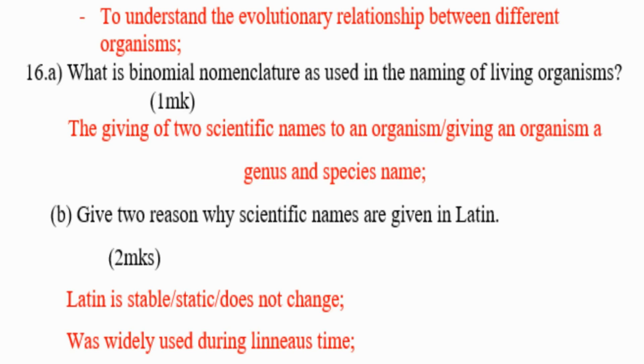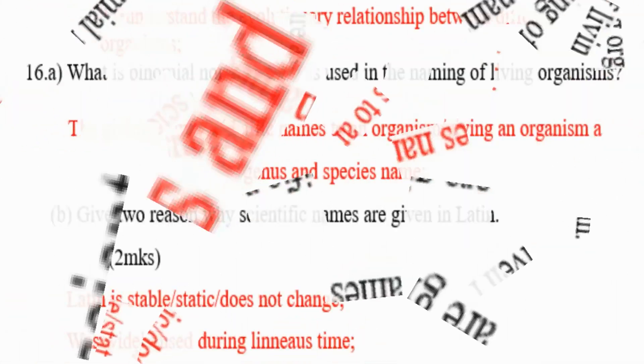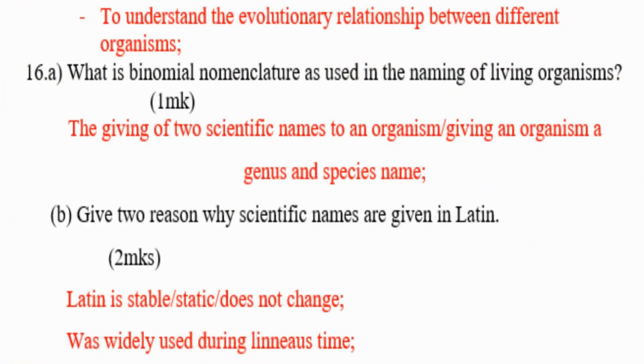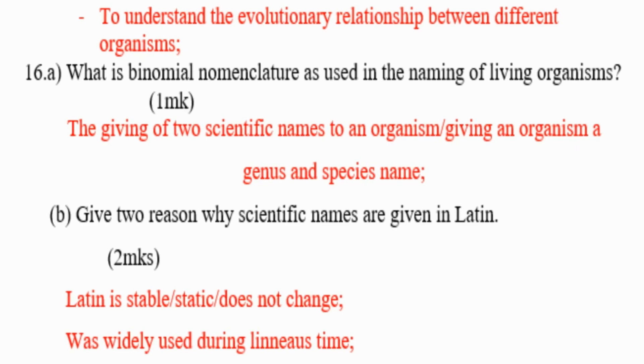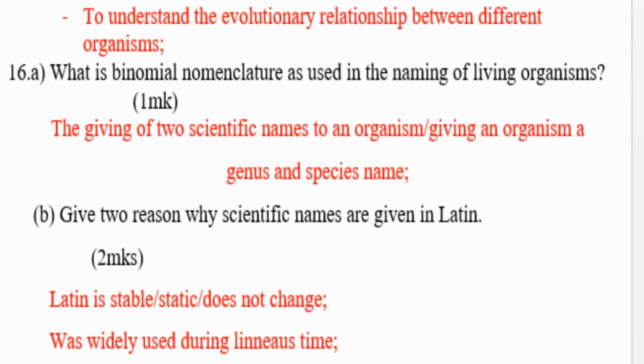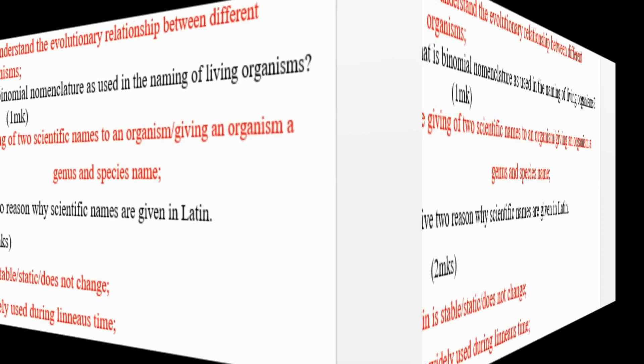Binomial nomenclature is the act of giving two names to an organism, that is a genus name and species name. Next, give two reasons why scientific names are given in Latin. Number one: Latin is stable, static, does not change. Number two: was widely used during Linnaeus' time.